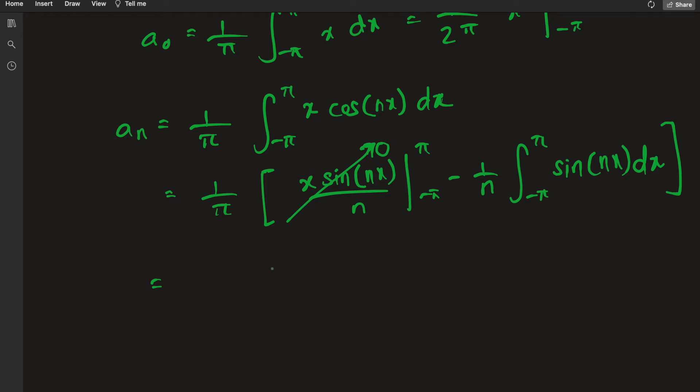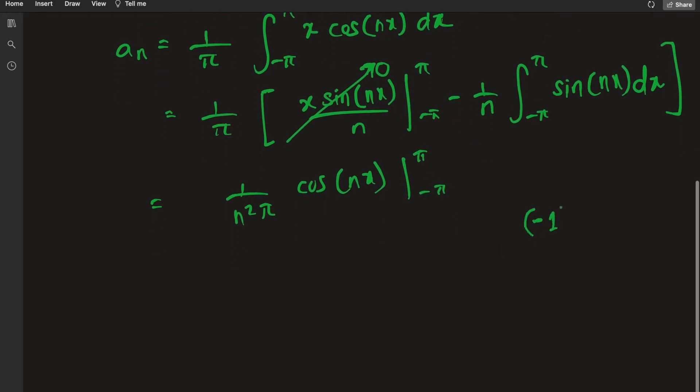And then if you just evaluate this, you have 1 over n squared π cosine of nx at π and negative π. Well, cosine of nπ is actually alternating (-1)ⁿ, and since cosine is even, cosine will take this value at both of these points.